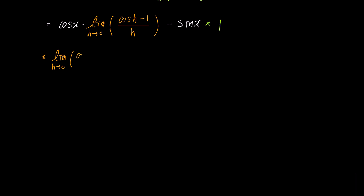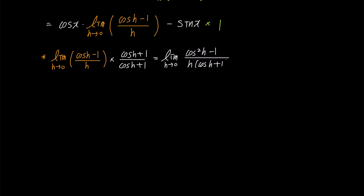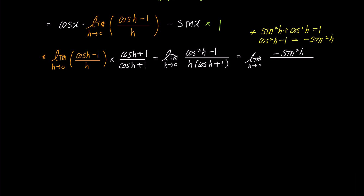We are left with the value of the limit indicated in orange. We'll multiply the numerator and denominator of the limit of cosine h minus 1 over h by cosine h plus 1. The numerator becomes cosine squared h minus 1, and the denominator becomes h times cosine h plus 1. Using the trigonometric identity sine squared h plus cosine squared h equals 1, we can replace cosine squared h minus 1 with negative sine squared h in the numerator.